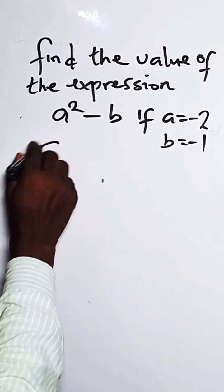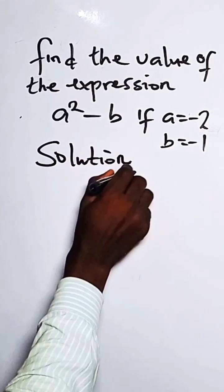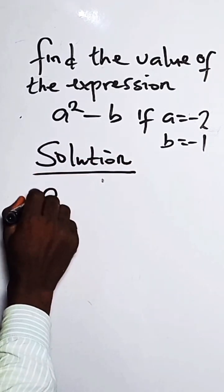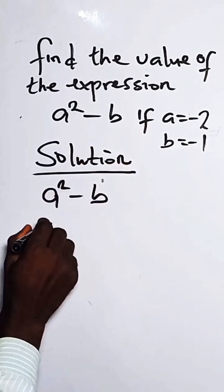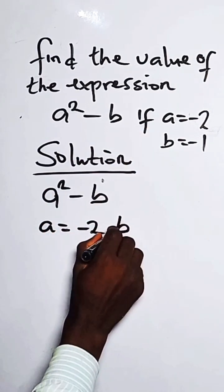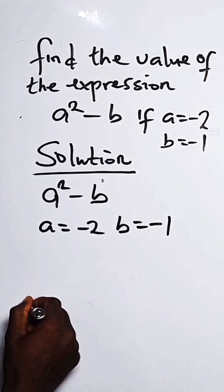How do we do this solution? We have the expression as a squared minus b. When a equals minus 2, b equals minus 1. So what do we do?